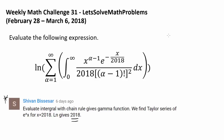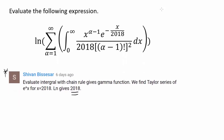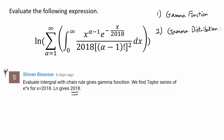The two methods I'm going to show you for solving this pretty intimidating integral are: first, using a gamma function — that's the method most of you who correctly answered this question employed — and second, using gamma distribution, which is also straightforward. There are other ways, such as integration by parts, but really, gamma function properties can be derived using integration by parts, so if you use gamma function, you are implicitly using those properties.